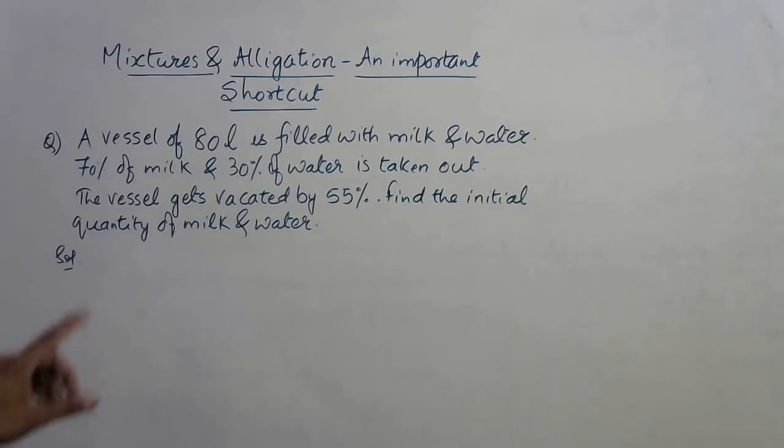We need to find out the initial quantity of milk and water in the mixture. A very important problem. If you know the shortcut, this will take hardly 10 seconds to solve, so I'm going to tell you the shortcut for solving this kind of problem of mixtures and alligations.